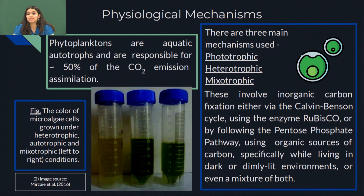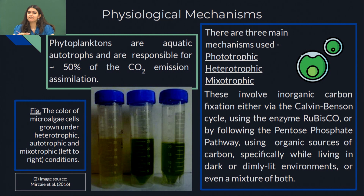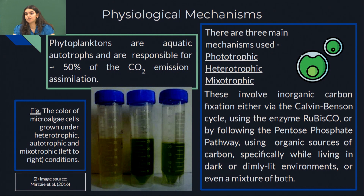The second mechanism is heterotrophic in nature. An added advantage is that organisms following this mechanism do not require a light source and can also utilize inorganic sources of carbon. This mechanism developed as an adaptive strategy by organisms that grew in dark or dimly lit environments with a lack of normal food resources. The final one is mixotrophic in nature, and as the name suggests, it is a mixture of both autotrophic and heterotrophic, meaning these organisms can use both organic and inorganic sources of carbon in both the presence or absence of light.